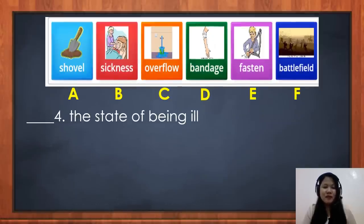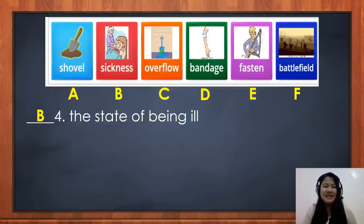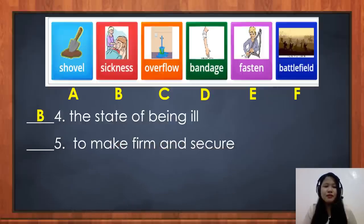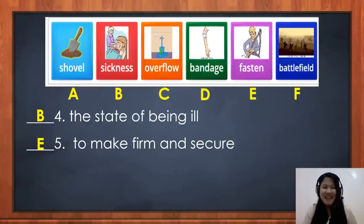Number 4: the state of being ill. The correct answer is letter B — sickness. It is the state of being ill. Number 5: to make firm and secure. If your answer is letter E, fasten, that is correct!